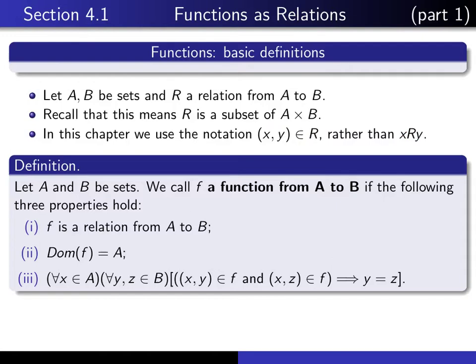Secondly, the domain of that relation should be all of A. And thirdly, we have this property here, that for all x in A and for all y and z in B, if (x, y) and (x, z) are both elements of the relation, then y equals z.